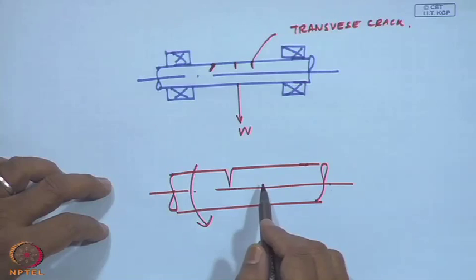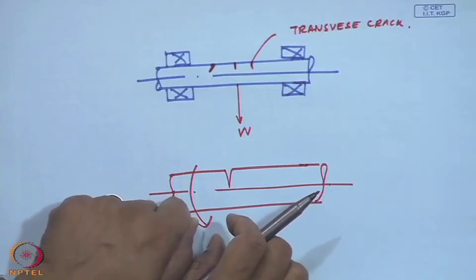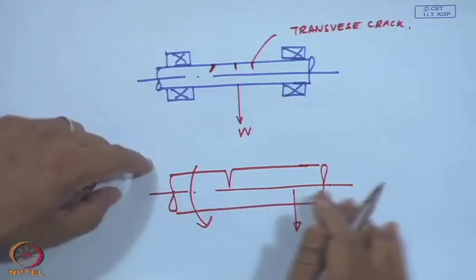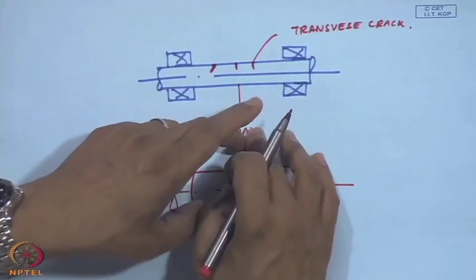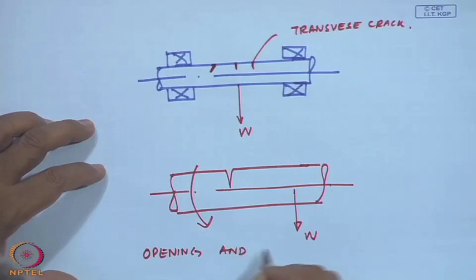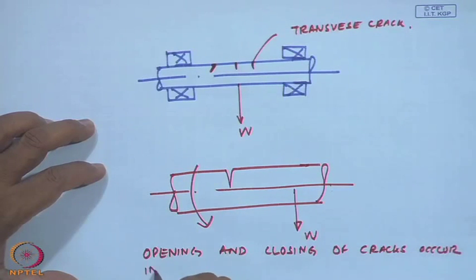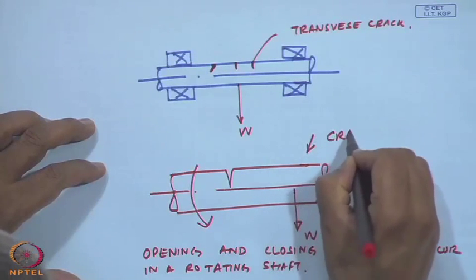Each time the crack comes to the bottom because of loads, it is going to close; when the shaft rotates and the crack goes to the top it will close, and as it comes down it will open. This opening and closing of cracks in a rotating shaft is known as crack breathing.